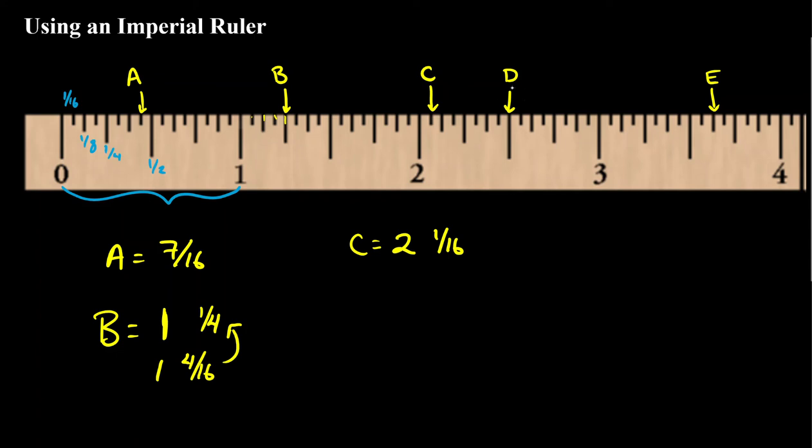And let's look at d. Well hopefully you can immediately recognize that d is the largest increment. That's the increment or the division that has the largest line attached to it. So because it's the largest line that means it's halfway in between two and three. So d is two and a half.